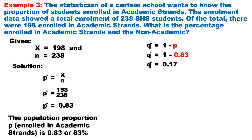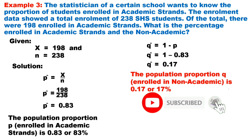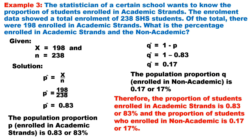To solve for Q-hat, use the formula 1 minus P. Substituting 0.83: 1 minus 0.83, Q-hat equals 0.17. It means that the population proportion Q for students enrolled in non-academic strands is 0.17 or 17%. To interpret the result, the proportion of students enrolled in academic strands is 0.83 or 83%, and the proportion enrolled in non-academic strands is 0.17 or 17%.